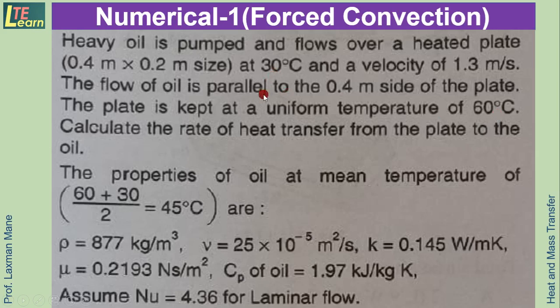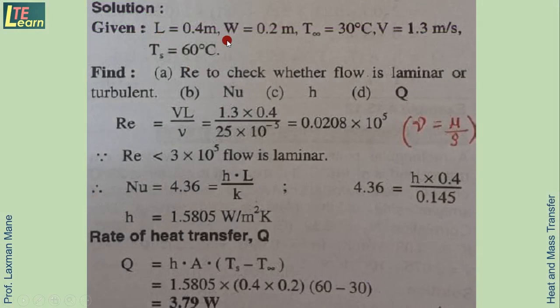The mean temperature is (60 + 30)/2 = 45°C. Properties of oil at 45°C — density, kinematic viscosity, thermal conductivity, dynamic viscosity, and specific heat — are given. Assume Nusselt number = 4.36 for laminar flow. Given data: length, width, temperature, velocity. First, find Reynolds number using Re = V·L/ν.